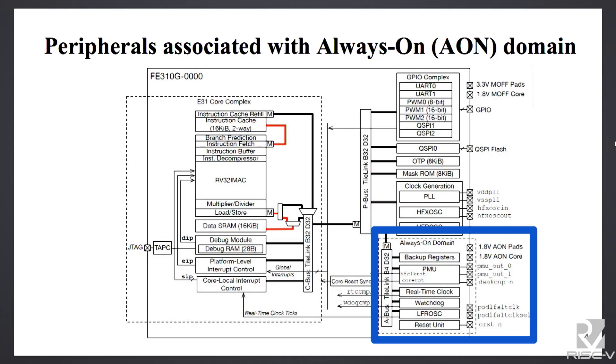Here in the always-on domain, we have clocking circuitry that requires to be low-power. We also have power-on resets and different voltage monitors that trigger events to the power management to decide what kind of power management mode to use. Now I'm going to focus on those blocks that are in the always-on domain.